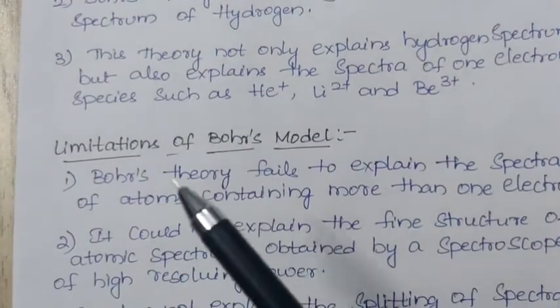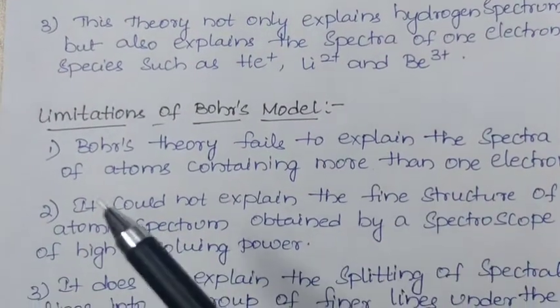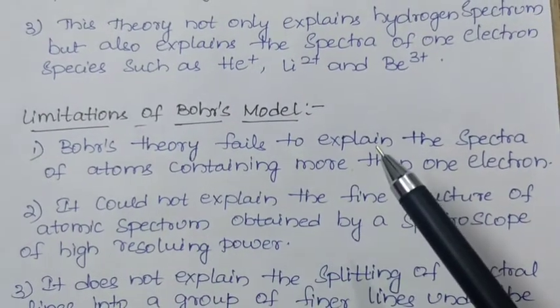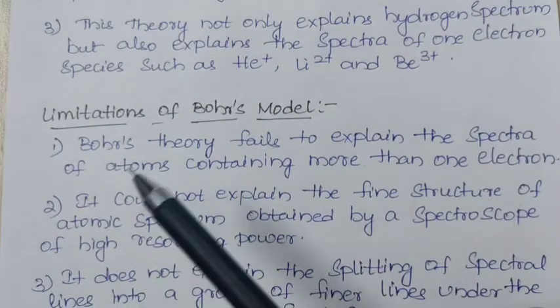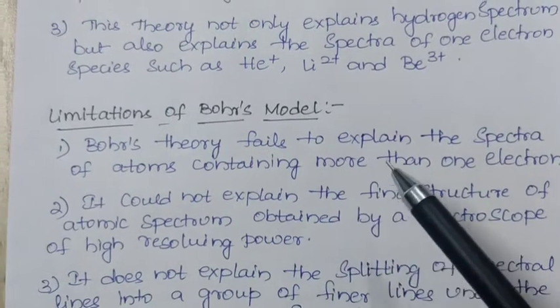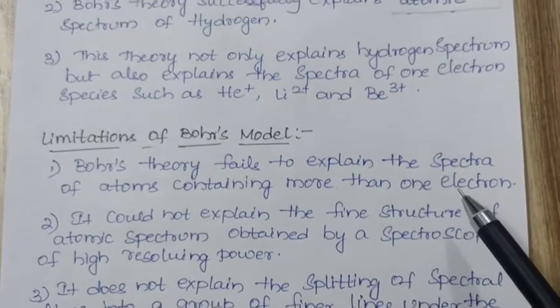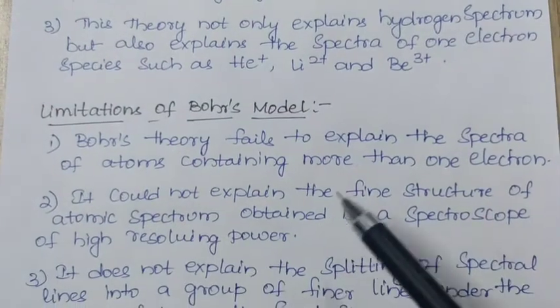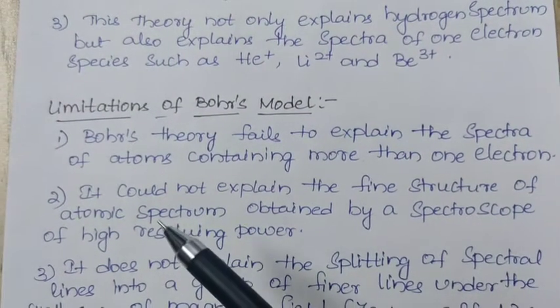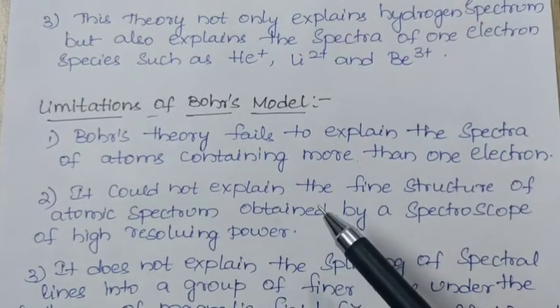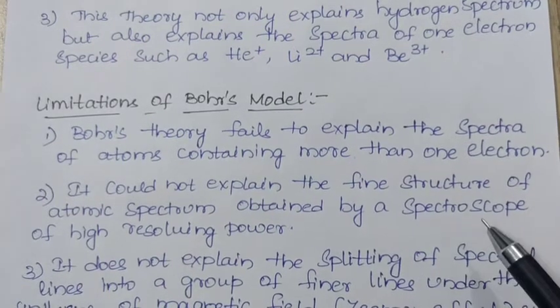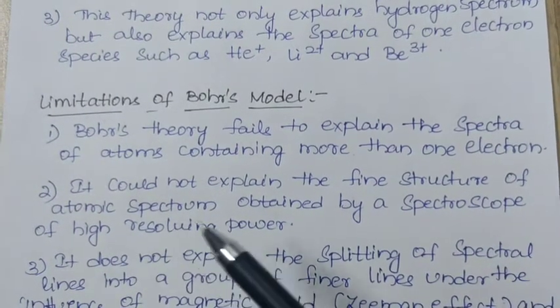Next, we will see the limitations of Bohr's model. Bohr's theory fails to explain the spectra of atoms containing more than one electron. It could not explain the fine structure of atomic spectrum obtained by a spectroscope of high resolving power.